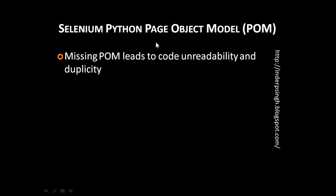The Page Object Model requires you to create separate files for the test logic and separate files for the webpage-specific information, like locators and operations. If you miss implementing the Page Object Model, it leads to code unreadability because the webpage locators and operations are mixed with test automation steps and validations. It also leads to code duplicity because multiple test cases may need to work with the same webpage.